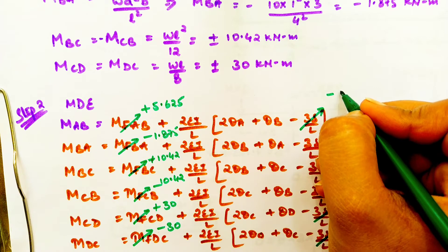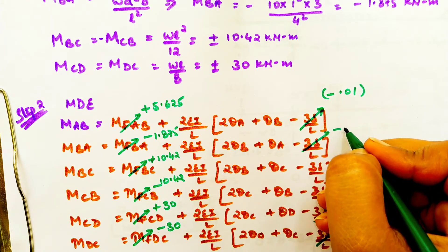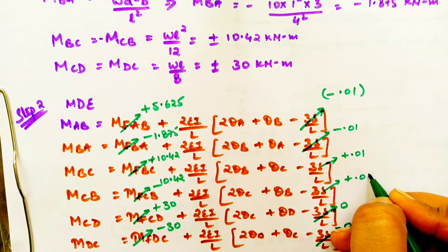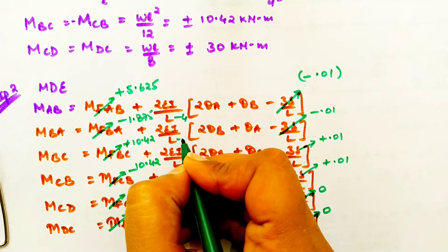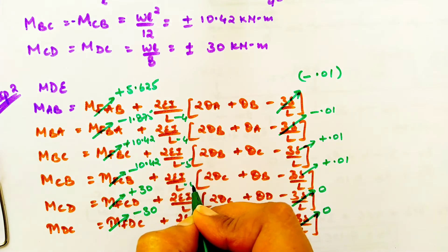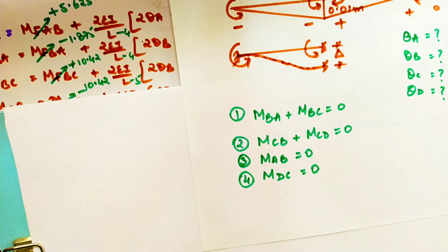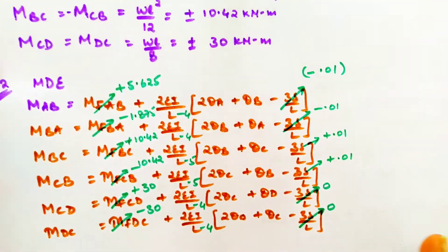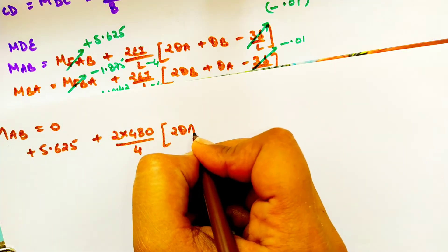For the AB span, δ is negative 0.01; for the BC span, δ is positive. We substitute accordingly so that chances of mistakes are reduced. After substituting, we apply the four compatibility equations to generate four equations in four unknowns, then simply put that in the calculator and find out the answers.